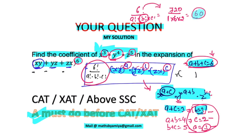So this is how we find the coefficient of any term in any expansion: by creating the general term, applying power distribution, and applying coefficient distribution when there are non-unit coefficients. Let's now practice with another question.